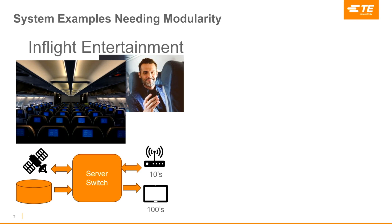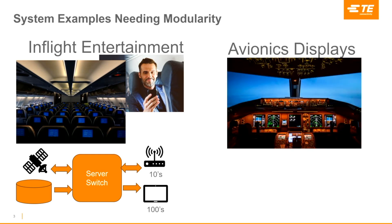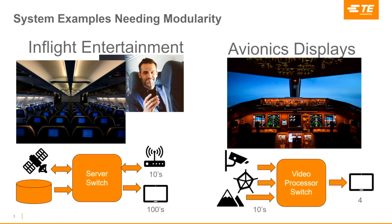Another example with unbalanced inputs and outputs is display support equipment, where you have multiple inputs but a fixed number of destination points — only four or five displays. You may have active real video, radar, geography and map information that needs to be processed, overlaid, and delivered to those screens. In an optical network, that's an unbalanced system, so you want the ability to match your solution to it.